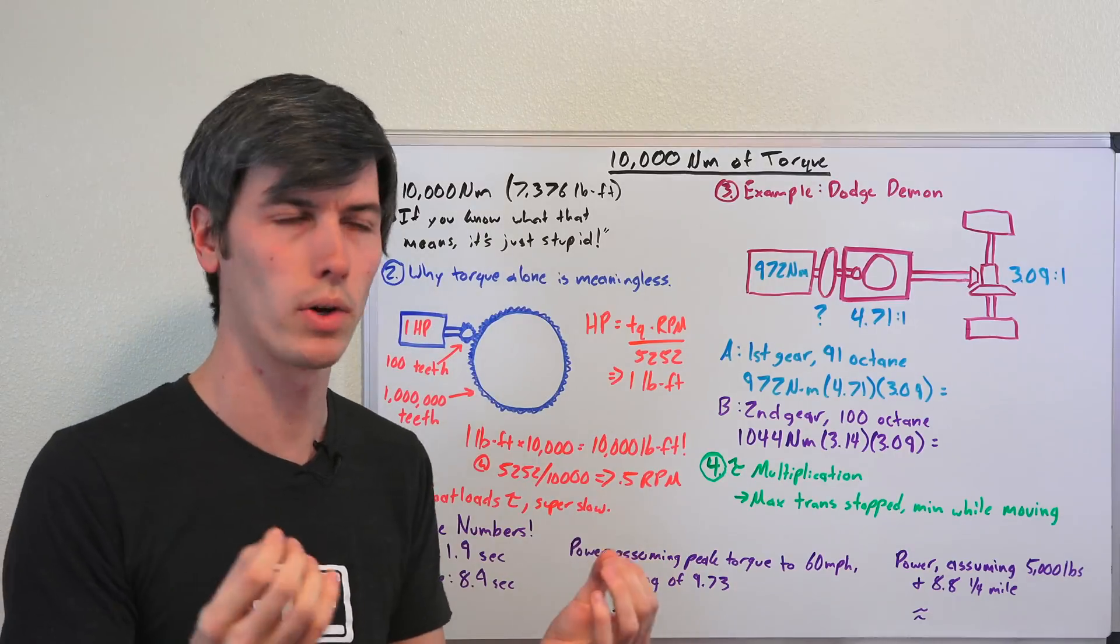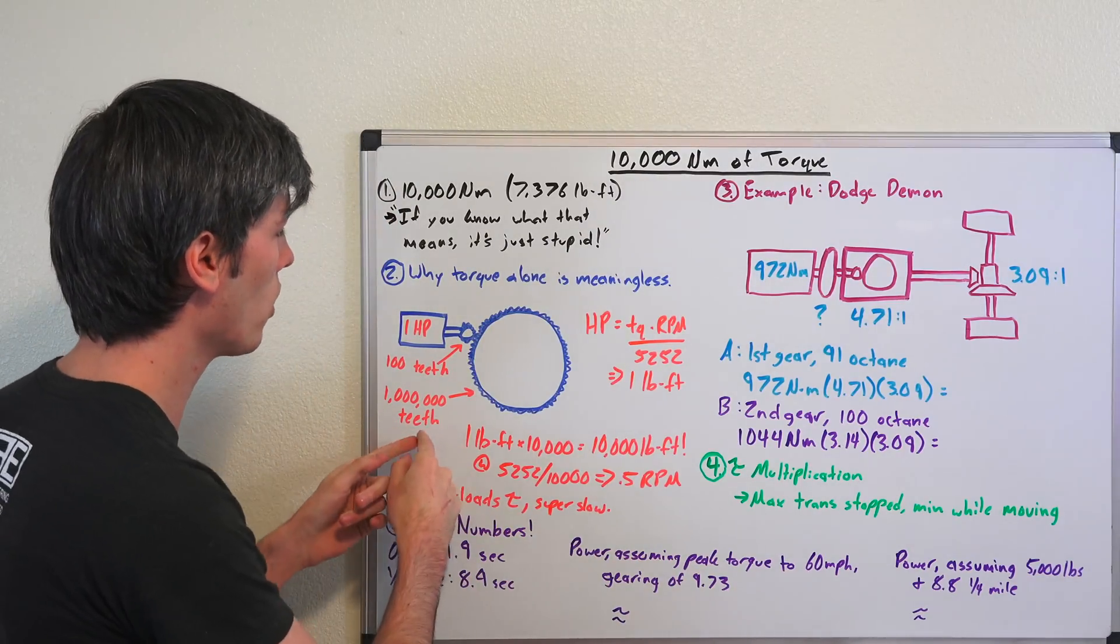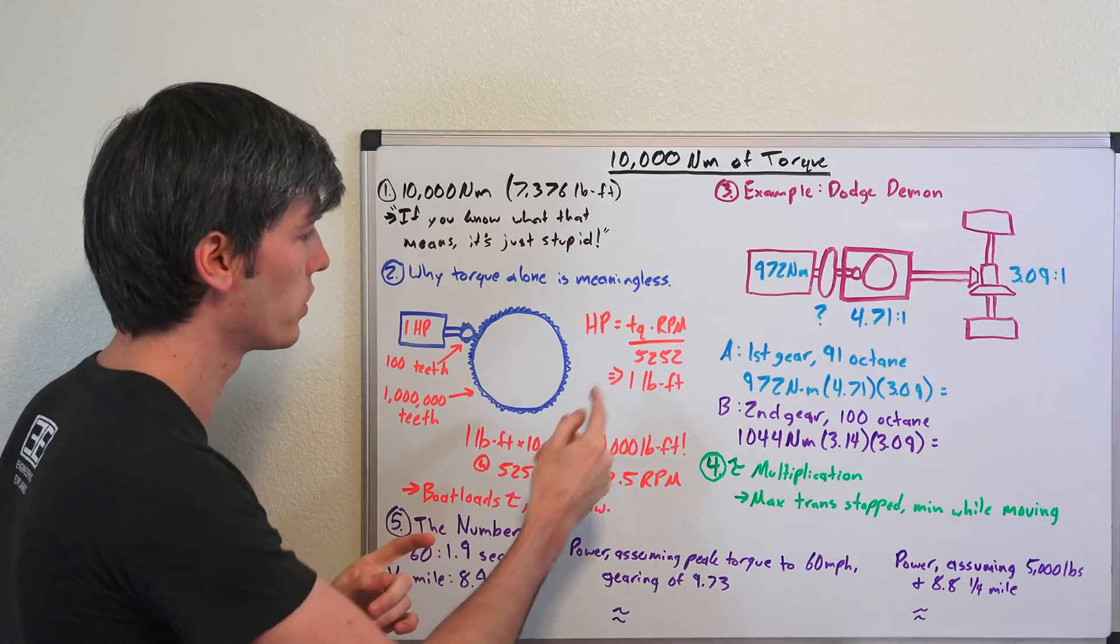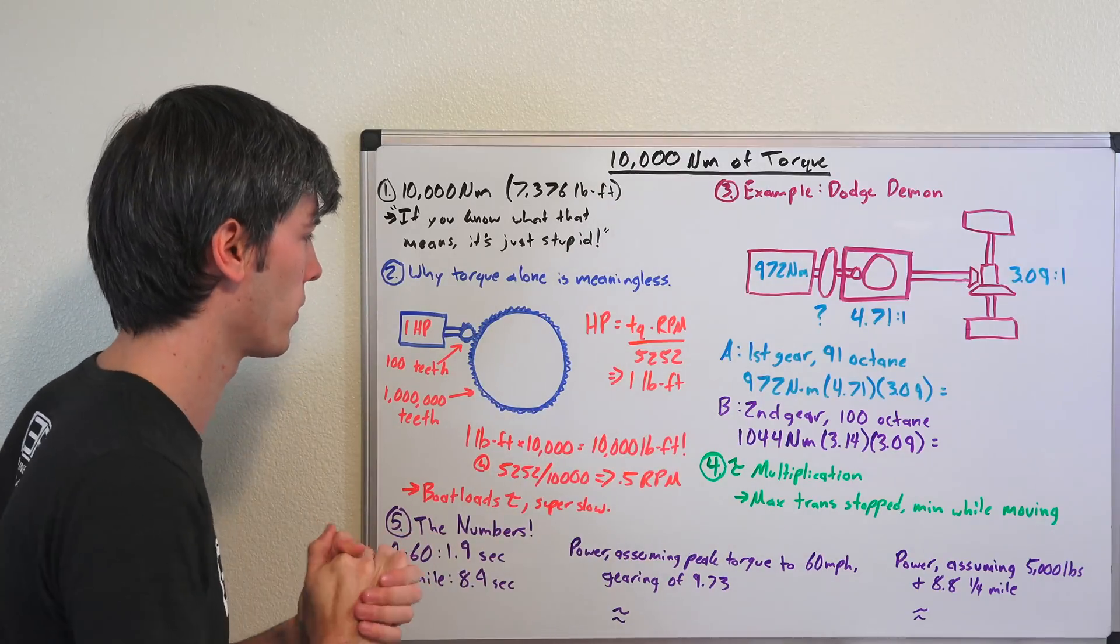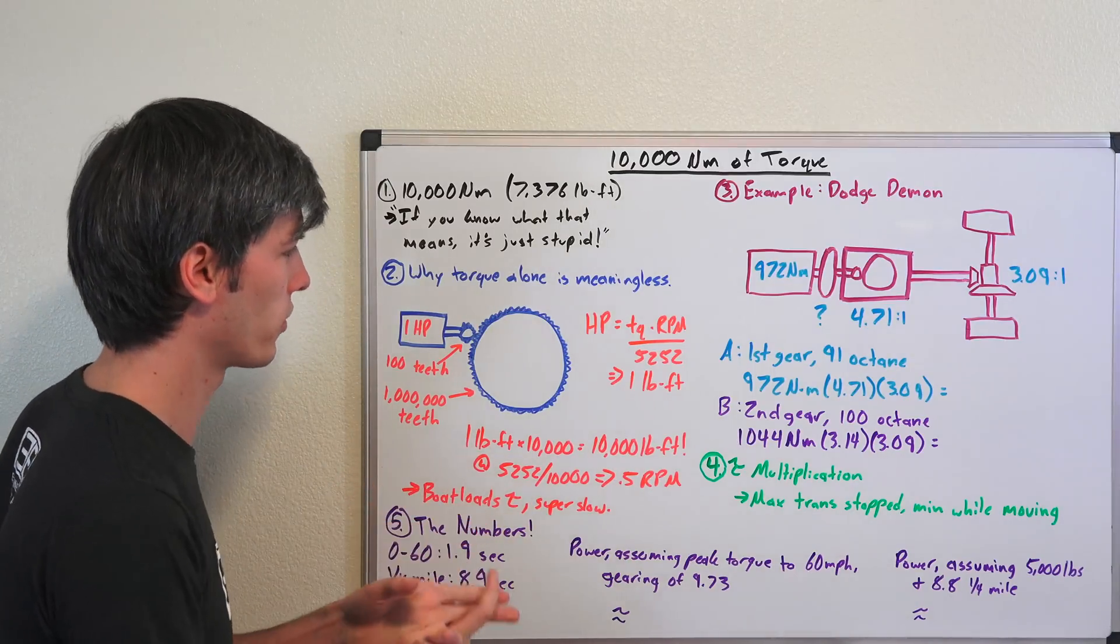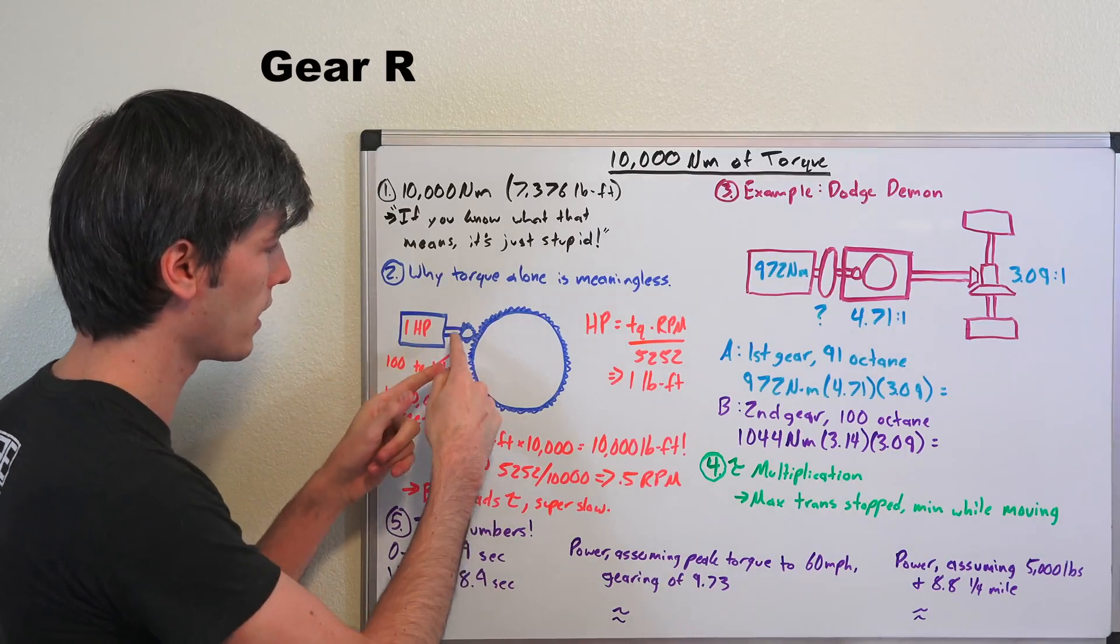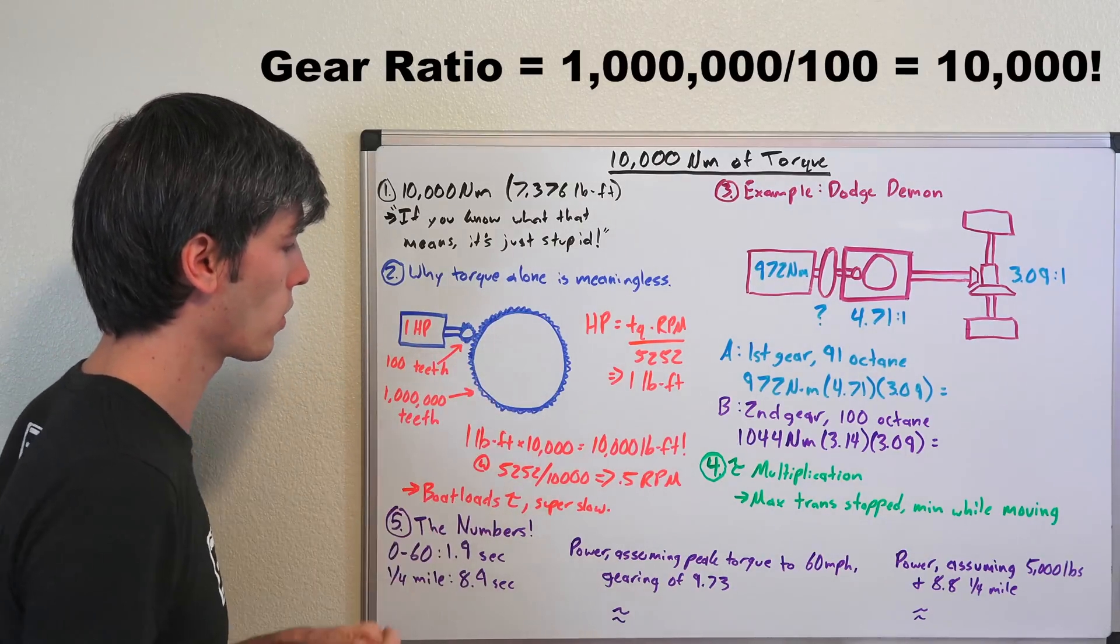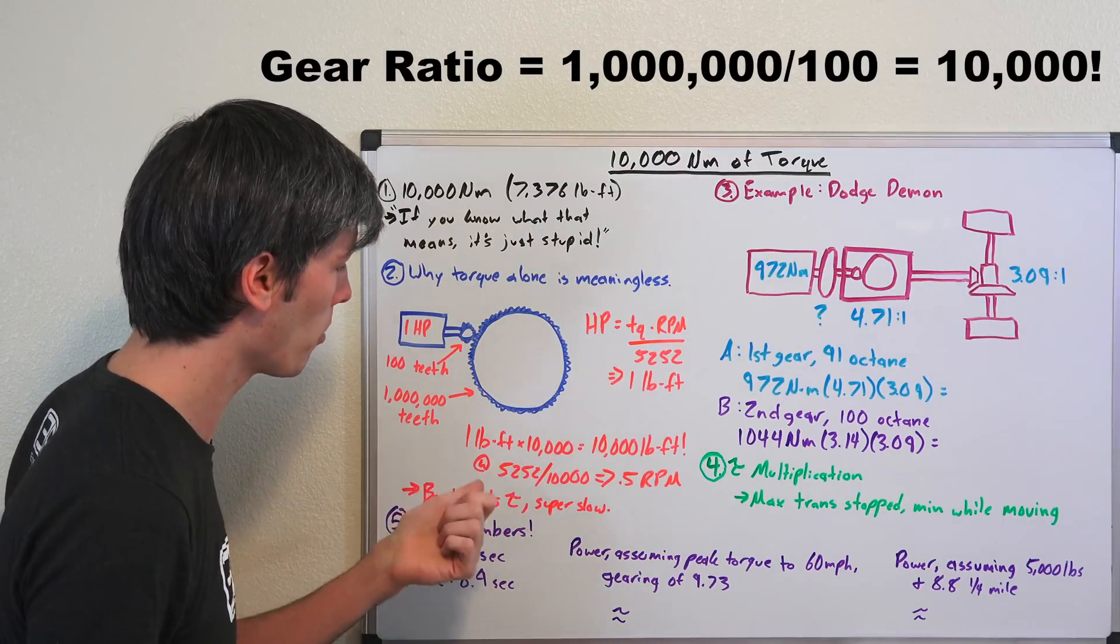and that gear is rotating a much larger gear which has a million teeth on it. So this one horsepower motor produces that one horsepower at 5,252 rpm. So we know that at 5,252 rpm based on the equation for horsepower it's going to be producing one pound-foot of torque as well. So we have an electric motor that produces one horsepower, one pound-foot of torque at 5,252 rpm. Now it's multiplied by 10,000, that's the gear ratio from this small gear to the larger gear.